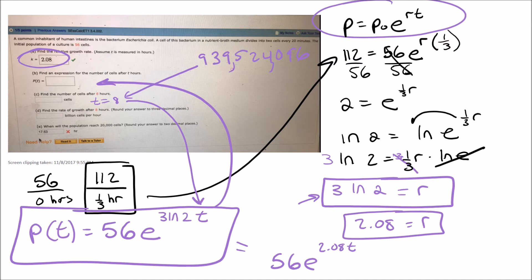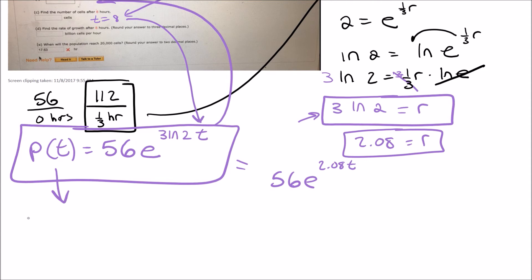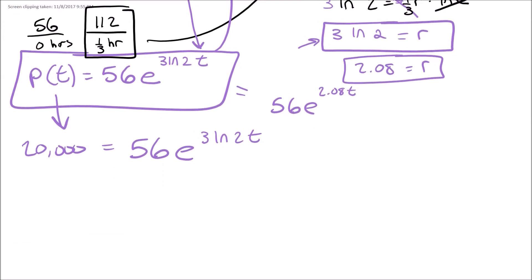All right, and then it says when will the population reach 20,000 cells? So that's when we want to know the population P of t. I want to know when that is 20,000. So basically I need to solve this equation for how long that's going to take, t, to do this.